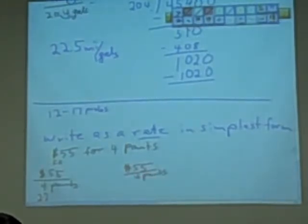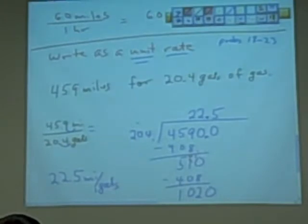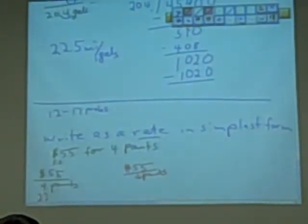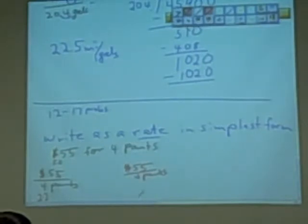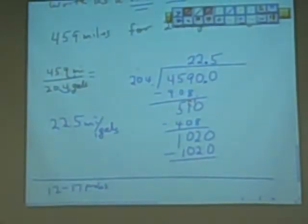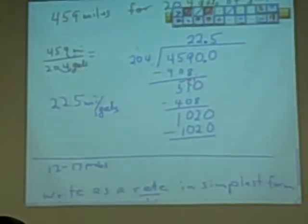So you see the difference between writing it as a rate and writing it as a unit rate. Writing it as a rate, you keep that denominator. Whereas a unit rate, you have to go ahead and divide it out. So rate, you just simplify. Units, you're going to divide to get 1, to get it to 1. That's right, to get it to the denominator of 1.